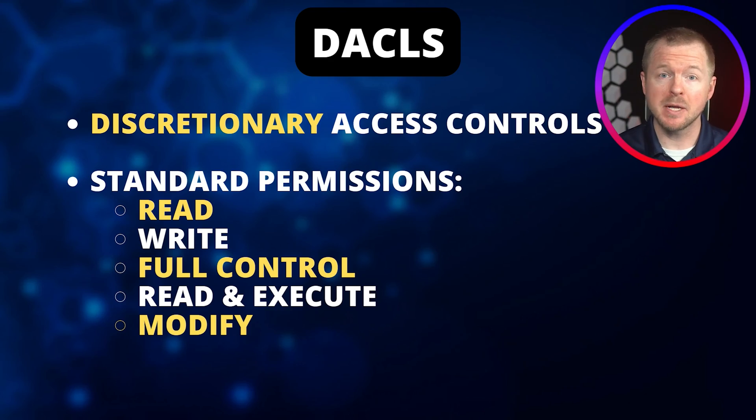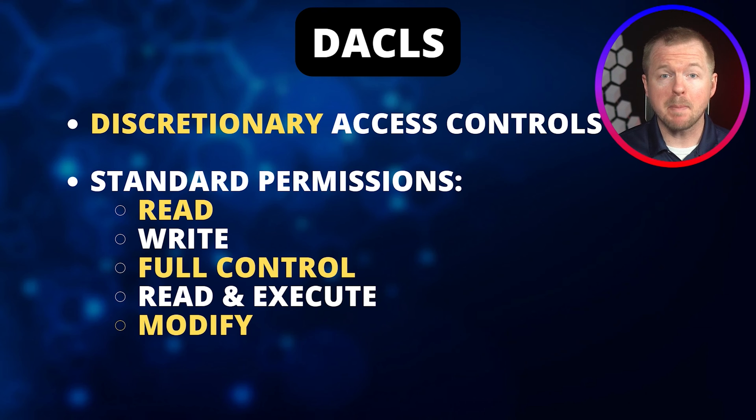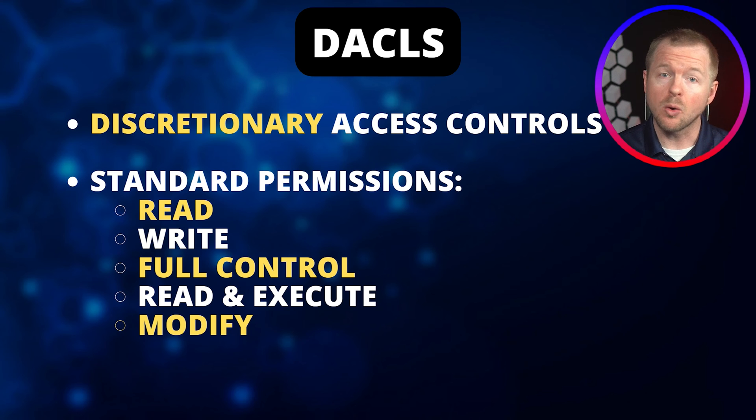Windows uses something called Discretionary Access Controls, or DACLs, to control access to files and system objects. Everything has a set of permissions for who can access that object or perform various actions. These objects have an object owner that can always modify permissions and control who can access it. On the screen are standard permission levels that exist in Windows. You can give a user the read permission by itself, or you can give multiple permissions. Windows also allows for granular control with advanced permissions.